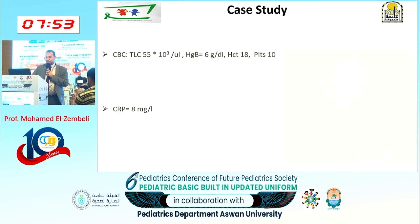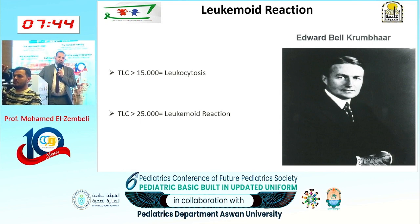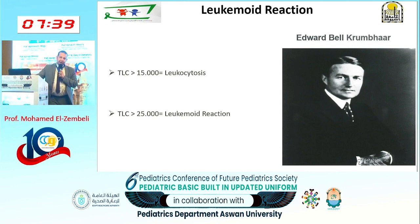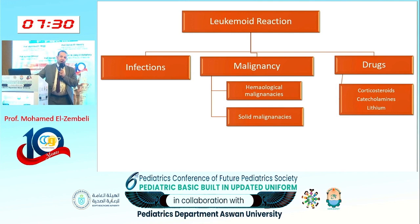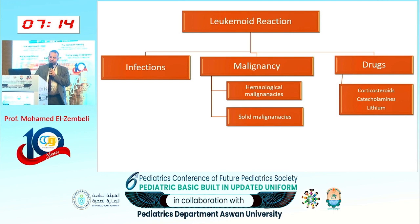Professor Edward Bell Kompier, in 1926, was the one who described the term leukemoid reaction. It is defined as a total leukocytic count greater than 15,000 — called leukocytosis — and greater than 25,000 is called a leukemoid reaction. The causes of leukemoid reaction: 50% are infections. The remaining 50% are between malignancy — whether hematological malignancy such as leukemia, or solid tumor with paraneoplastic syndrome — or certain drugs such as corticosteroids, catecholamines, and lithium.